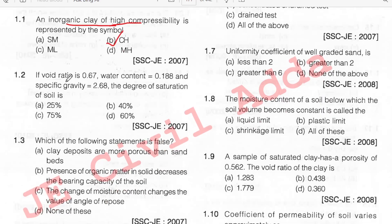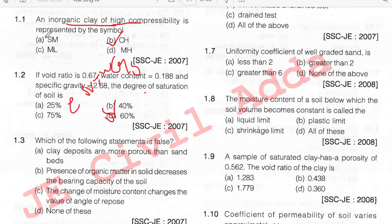If voids ratio is 0.67, water content is 0.188, and specific gravity is equal to 2.68, find the degree of saturation of soil. Using the formula E·S = W·GS, substituting all the given values, we get 75 percentage. Option C, 75 percentage.